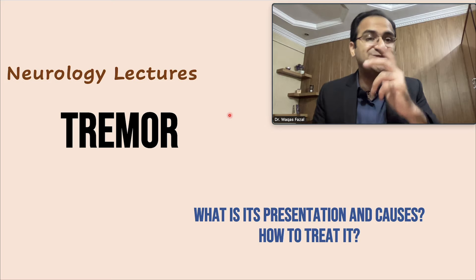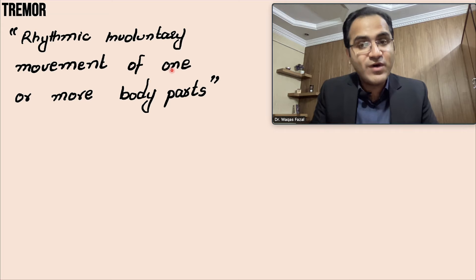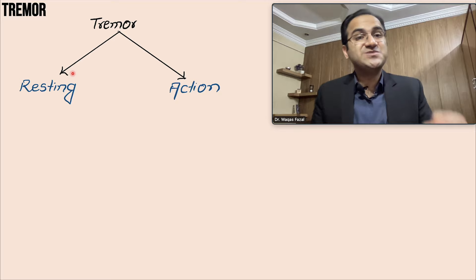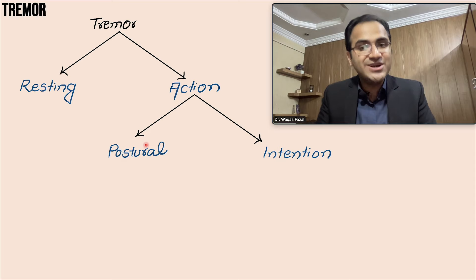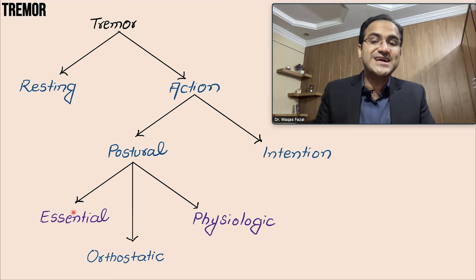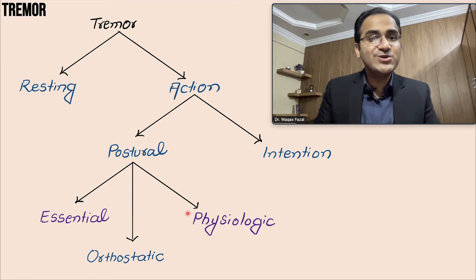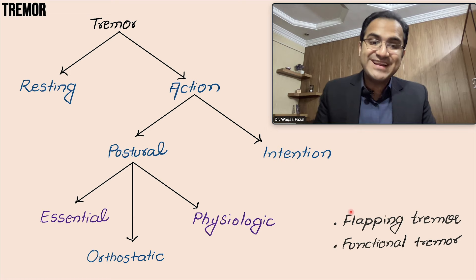Tremor is a rhythmic involuntary movement of one or more body parts. Tremor is divided into resting tremor, which is present at rest, and action tremor. Action tremor occurs when the person starts any voluntary movement and is further divided into postural tremor and intention tremor. Postural tremor is further divided into essential tremor, orthostatic tremor, and physiologic tremor. We are also going to discuss flapping tremor and functional tremor in this video.